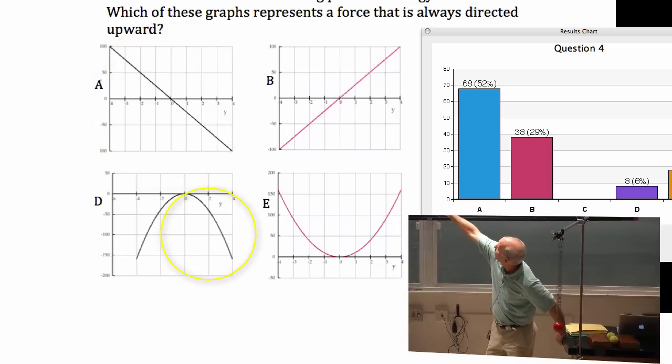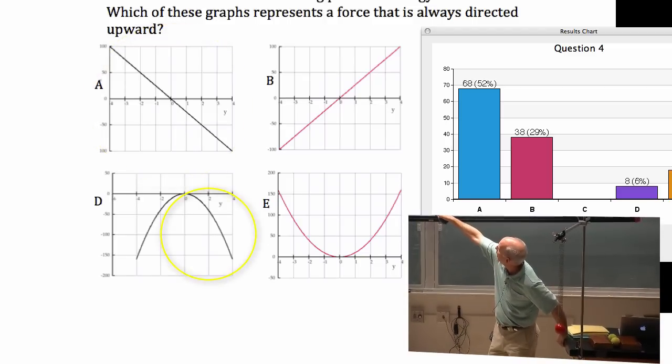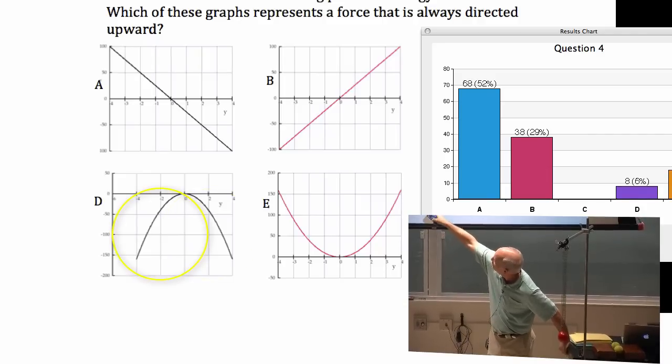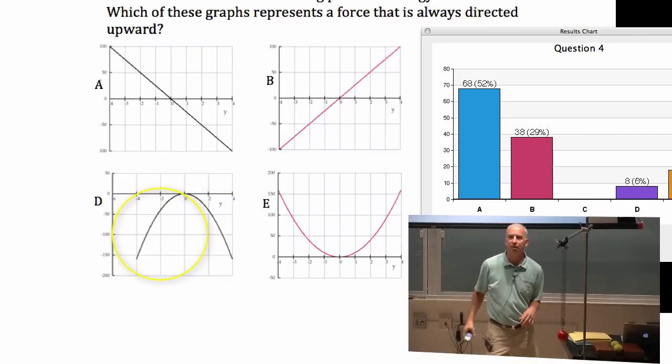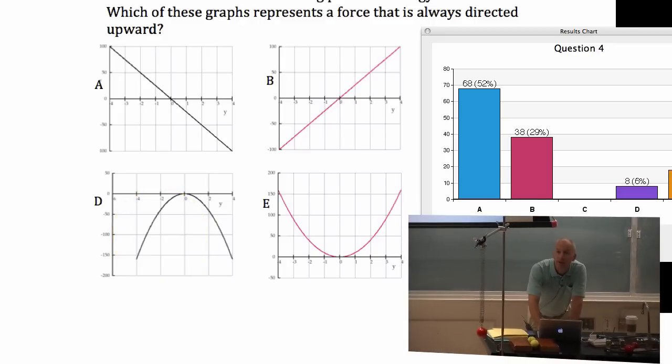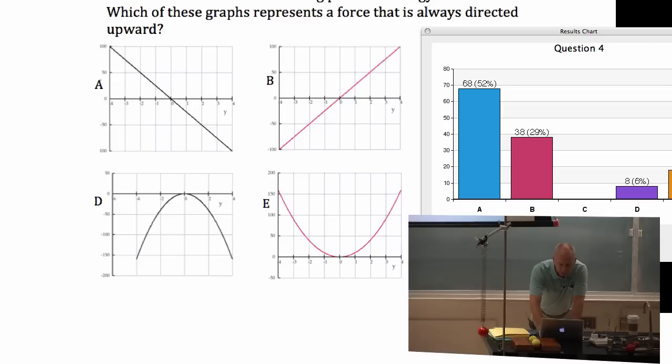This one, for instance, the potential energy goes down as you get higher and higher. But if you get lower than zero, then the potential energy goes down when you get lower. So, it's not always higher. So, D doesn't work. And E doesn't work. A is the one where the force is always upward.